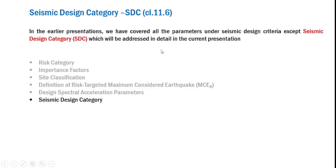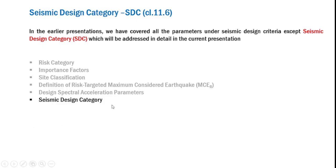If you refer to our earlier presentations, you will find that we have covered in detail the various parameters under seismic design criteria. These parameters included risk category, importance factors, site classification, definition of a risk-targeted maximum considered earthquake (MCER), and finally design spectral acceleration parameters. We are yet to address one more parameter — the seismic design category — and this is the topic we will talk about in detail today.